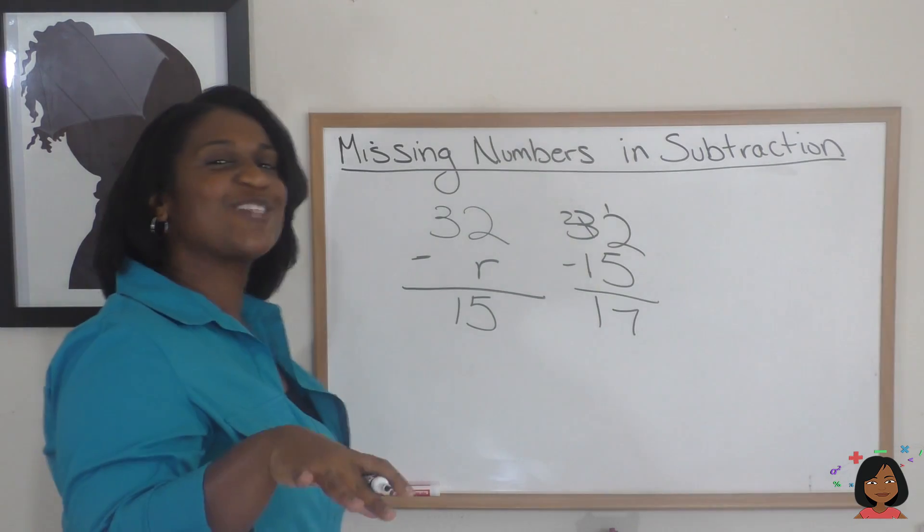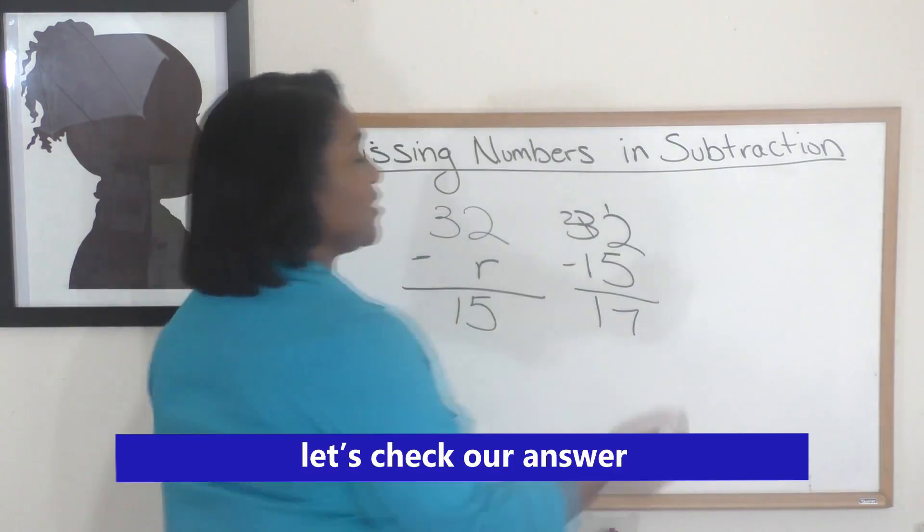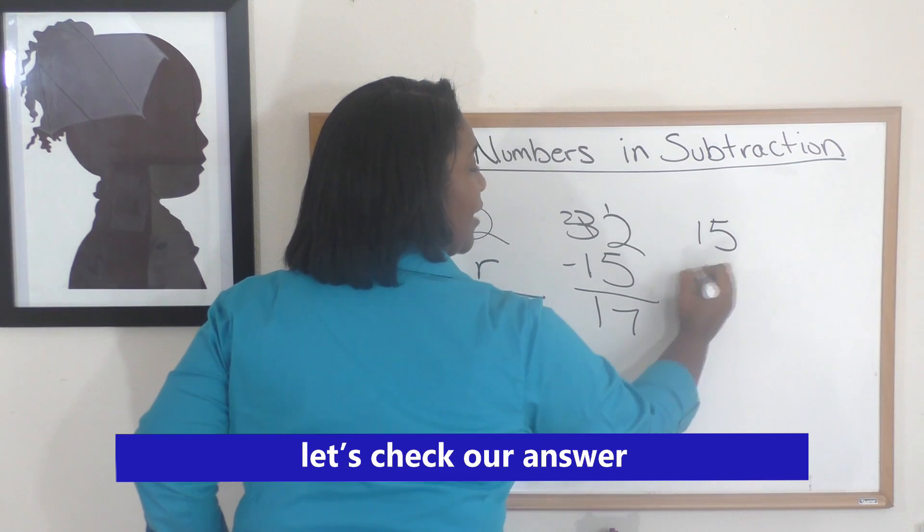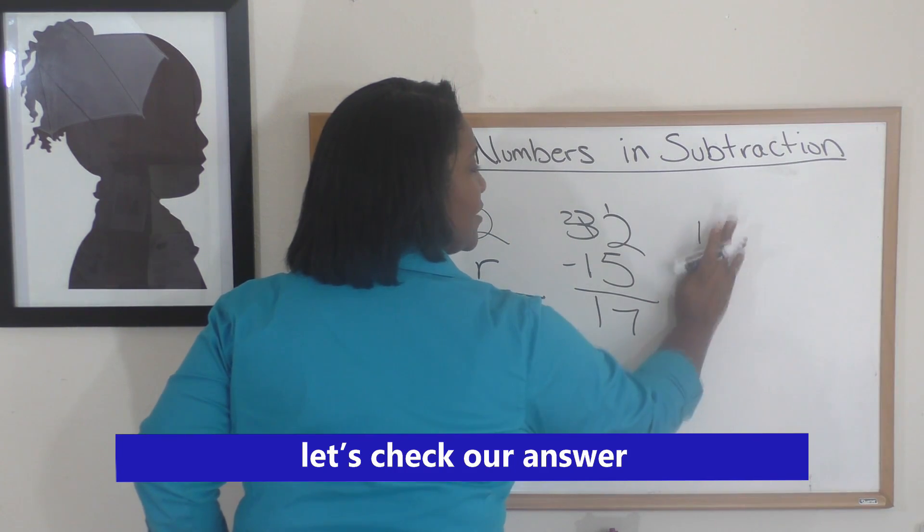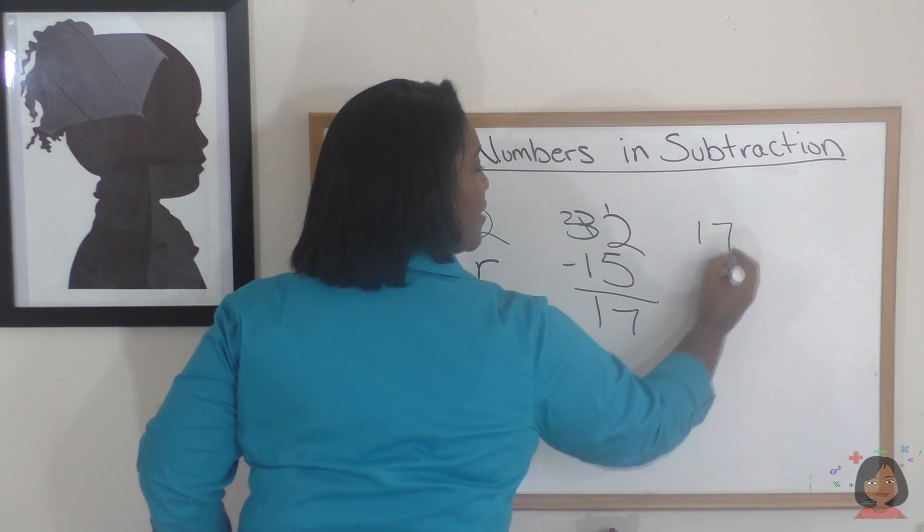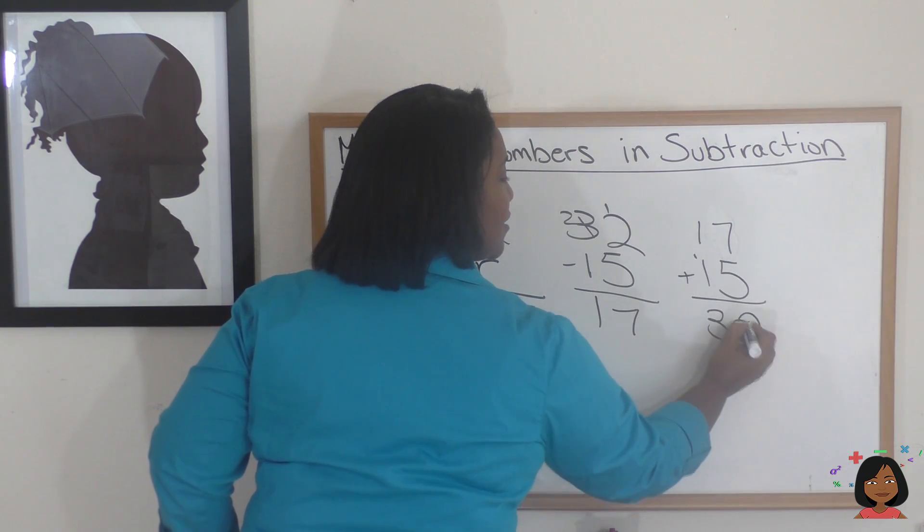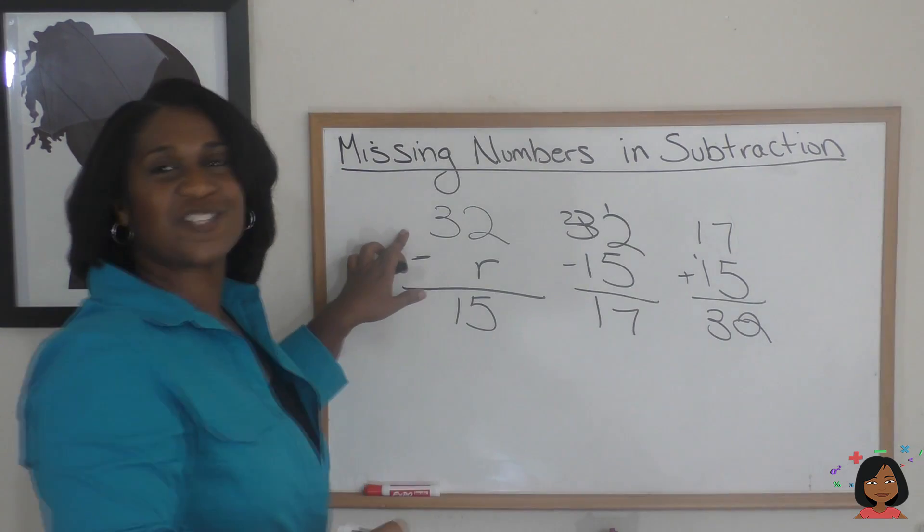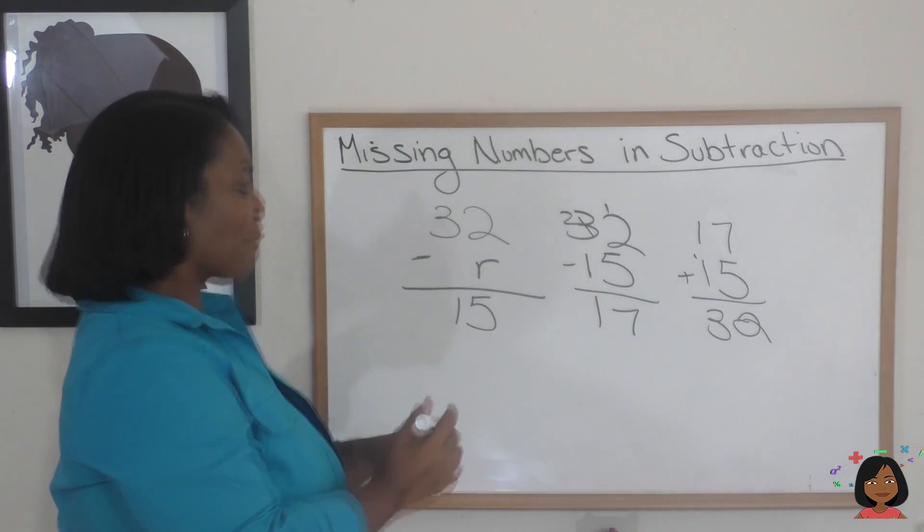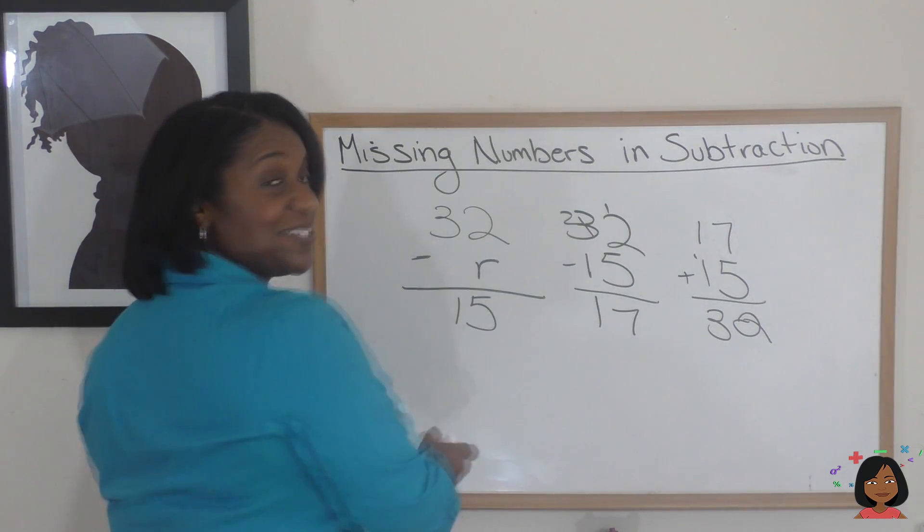But I'm not going to stop there. Let's use our built-in answer checker. Let's do 17 plus 15, and that gives us 32, which is what we started out with. So that means, correctly, that 17 is our answer.